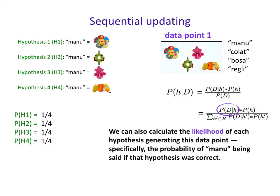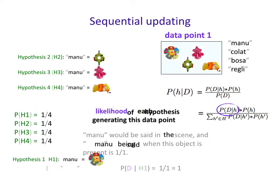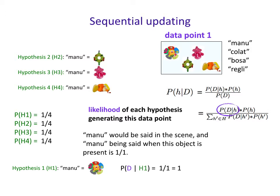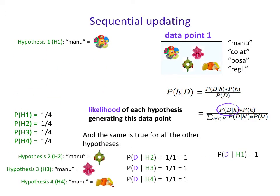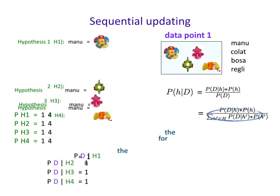Now let's calculate the likelihood — the probability of 'Manu' being said if that hypothesis were correct. We walk through each one: if 'Manu' meant that object, would you say 'Manu' in this scene? Yes. And it's the only object you'd say 'Manu' for, so you have just one total. The same is true for our other hypotheses — if 'Manu' meant each of those objects, we would say 'Manu' in this scene, giving probability one out of one. So all our likelihoods are one.